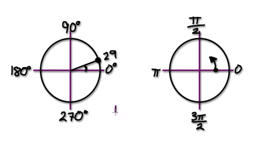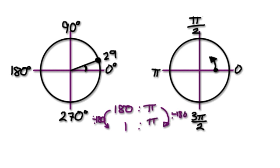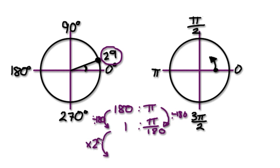So now let's start again. Originally we had 180 degrees equals pi radians. To get 29 degrees, divide both sides by 180. Dividing the left side by 180 gives you 1 degree, which means you've got to divide the right side by 180 as well, giving pi over 180. Because you want 29 degrees, then times both sides by 29.